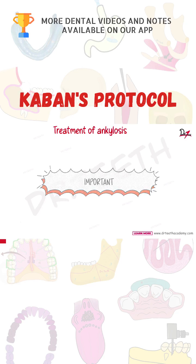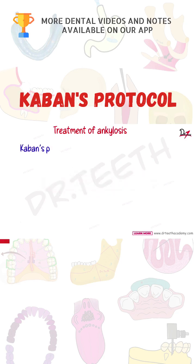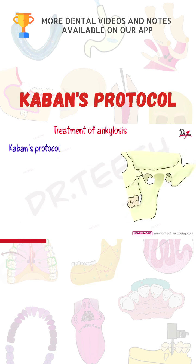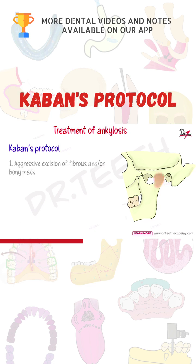This is a short note question on Cabans protocol. What is the Cabans protocol for the management of TMJ ankylosis in children? The first step is aggressive excision of the fibrous and bony mass. After aggressively removing the fibrous and bony mass, the second step is coronoidectomy on the affected side.